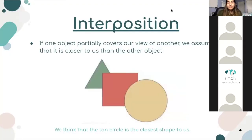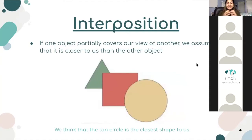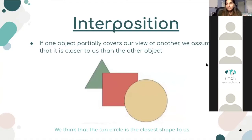The next one is interposition. If one object partially covers our view of another object, we assume it's closer to us. In this image, the tan circle blocks part of the red square, so we assume the circle is closer to us than the square. Similarly, the red square blocks the green triangle, so we assume the square is closer to us than the triangle. That's called interposition.